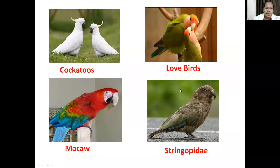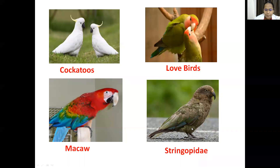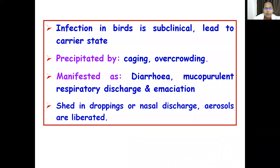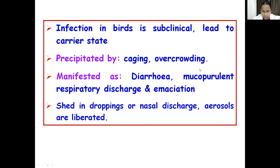The psittacine birds include cockatoos, lovebirds, macaws, and Strigopidae, responsible for psittacosis infection. As I mentioned, this disease is subclinical in birds and they are usually the carriers. Disease may be precipitated by caging or overcrowding, and is manifested as diarrhea, mucopurulent respiratory discharge, and emaciation.